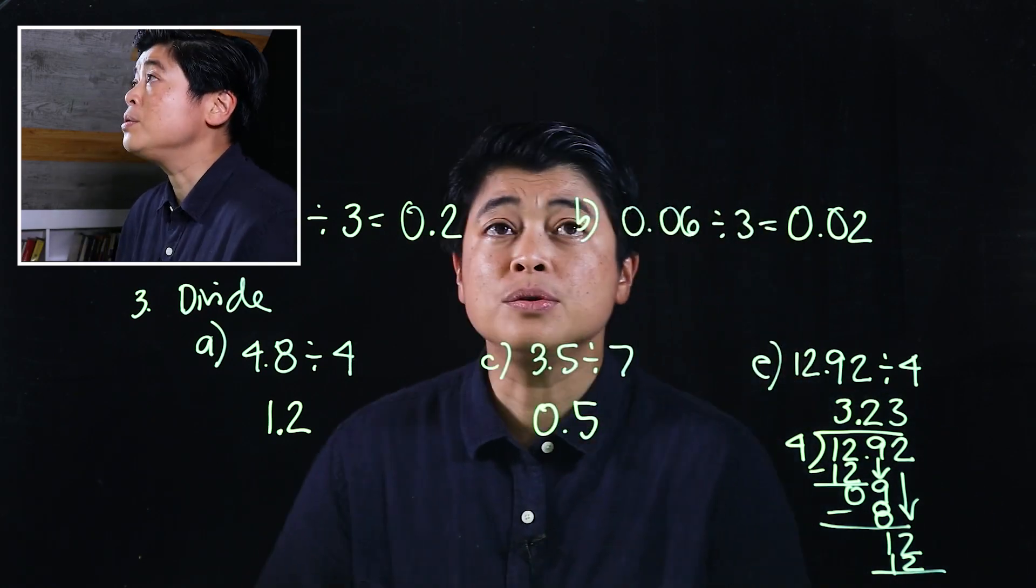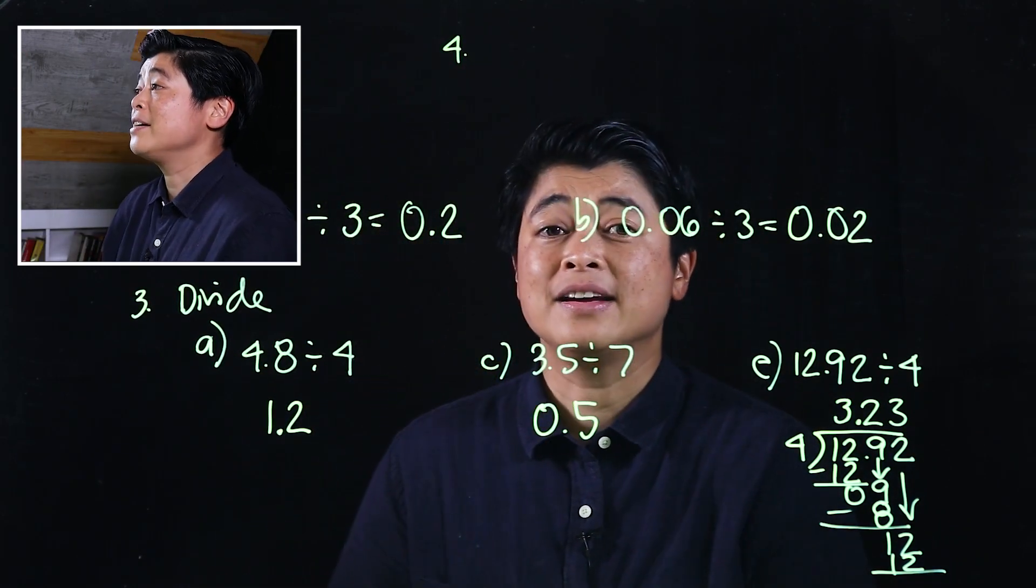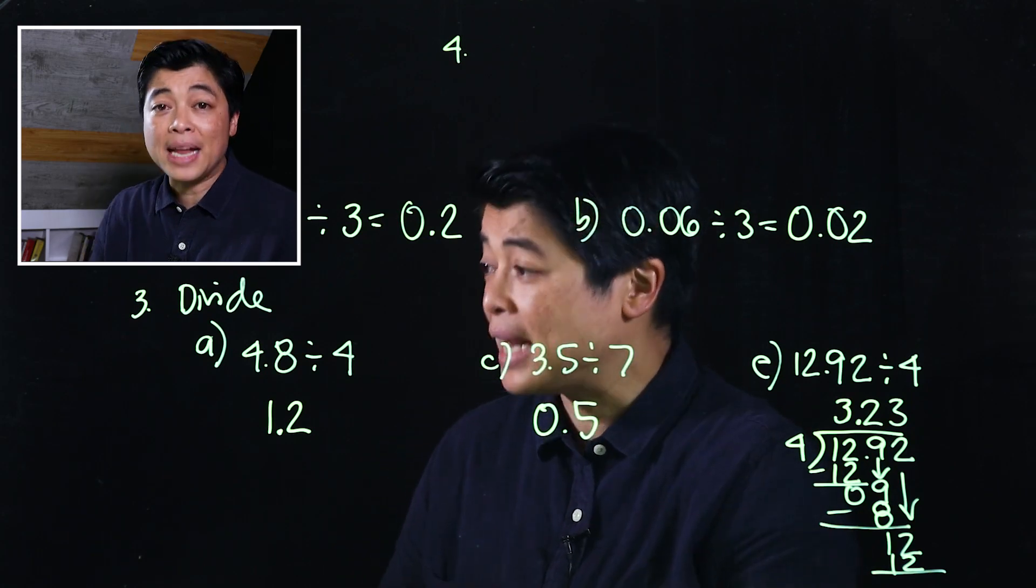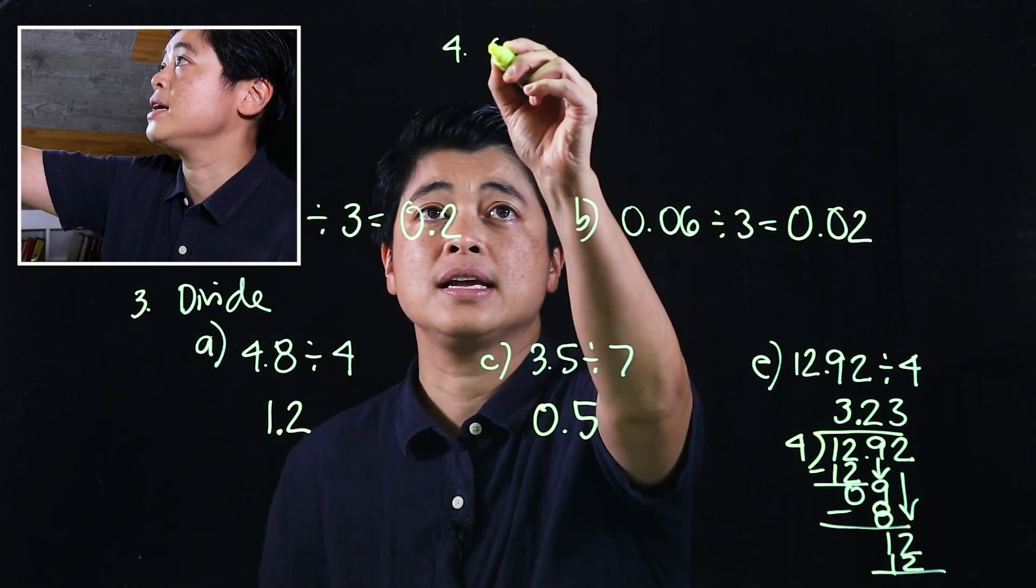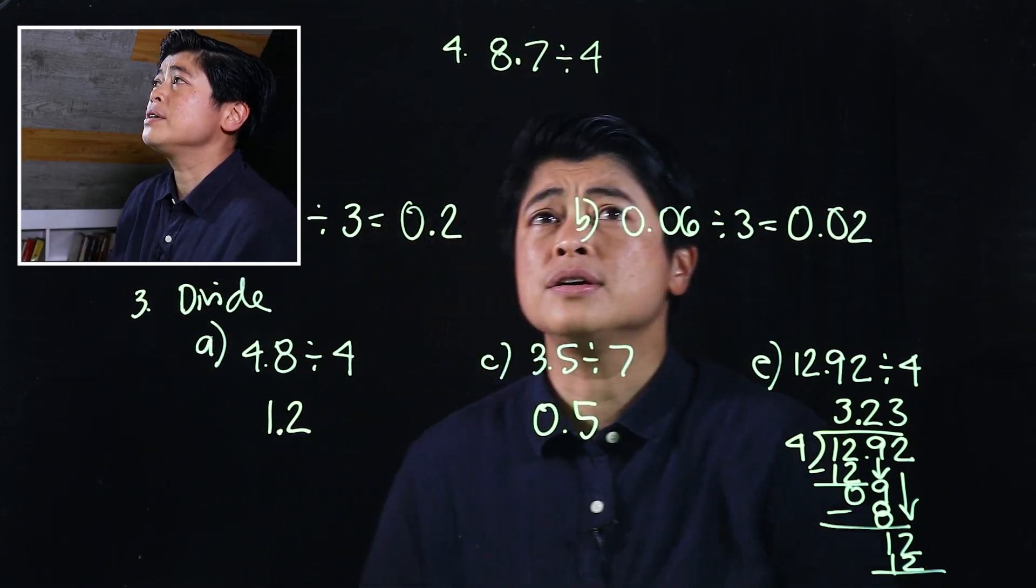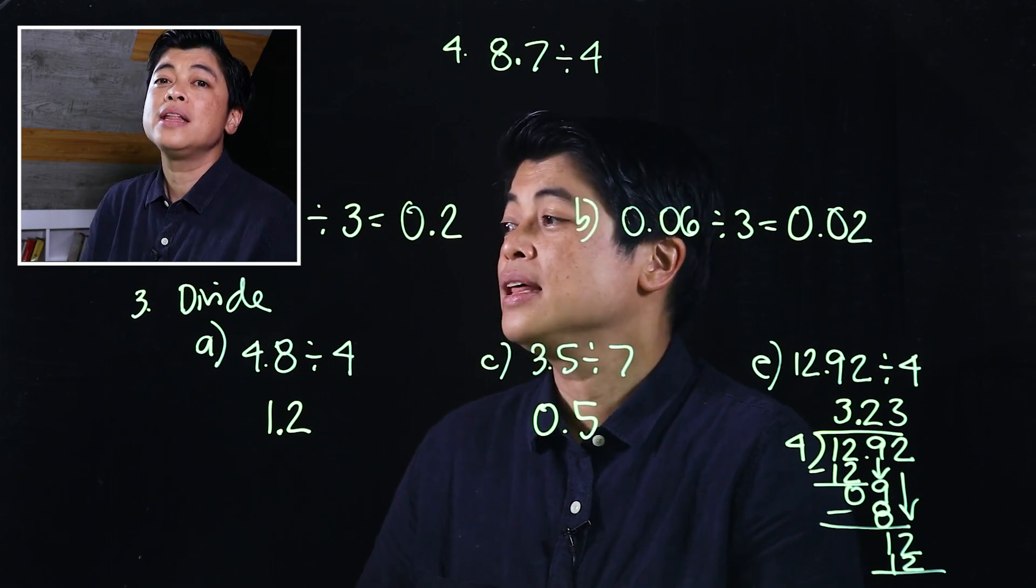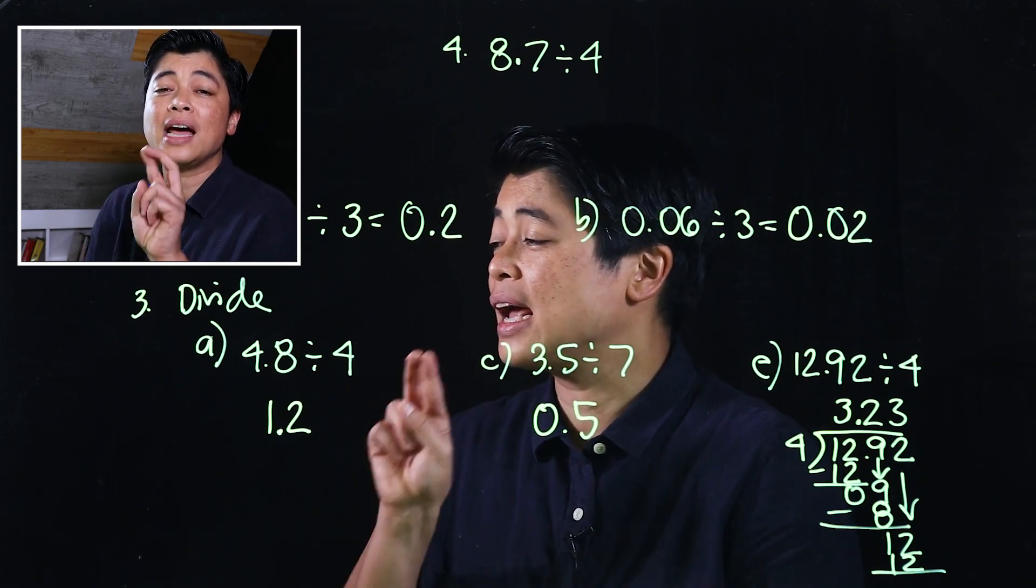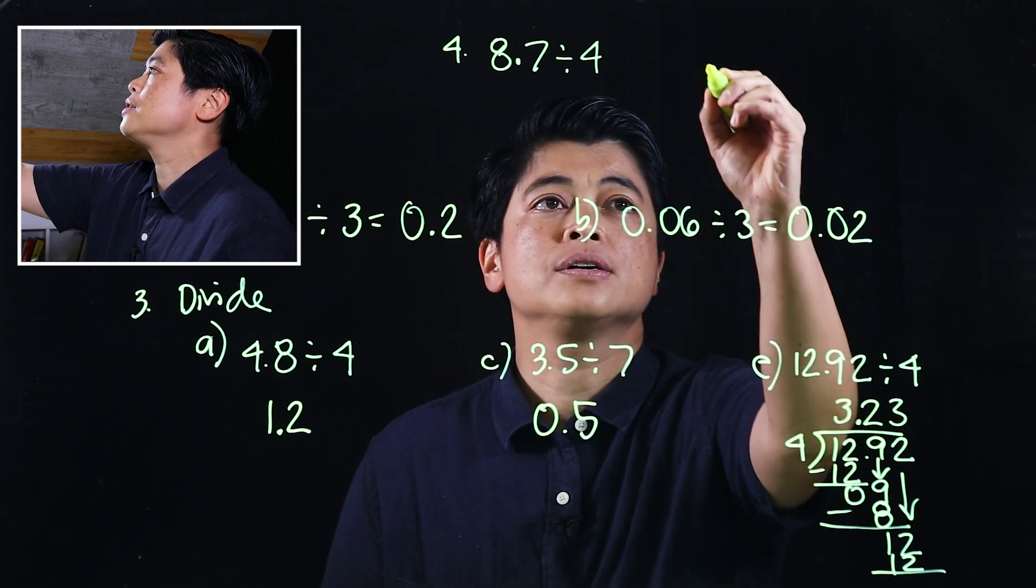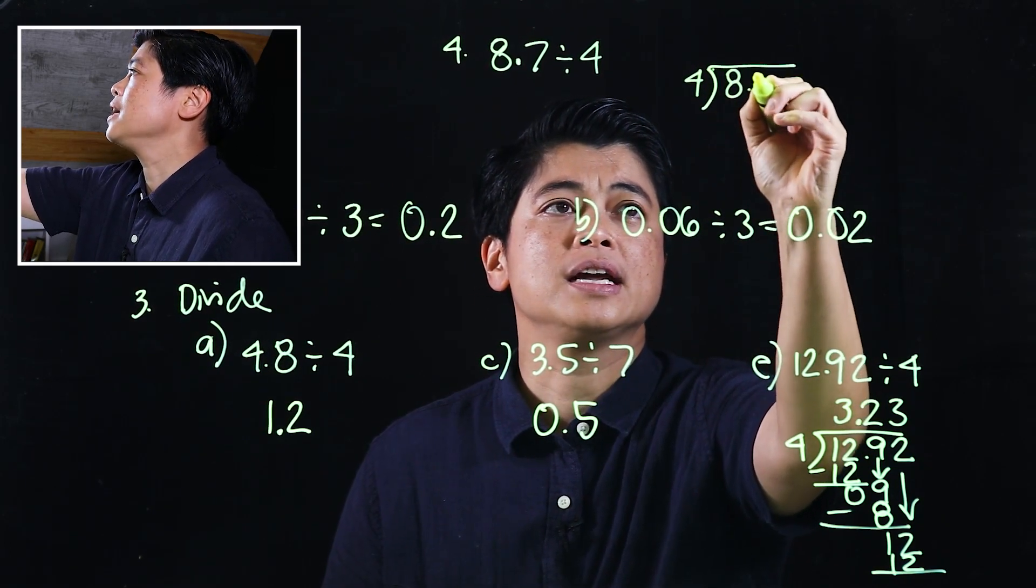One more problem that I will do is problem number 4. In problem number 4, it says divide and correct the answer to one decimal place. So which means if I take 8.7 divided by 4, since it gives me a one decimal place round off, that means I'd have to keep dividing until I have the hundredths place so I can round off.